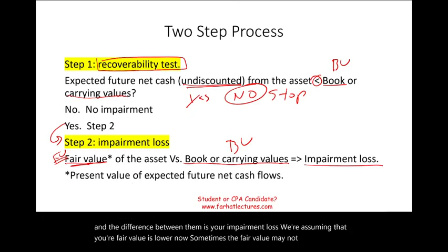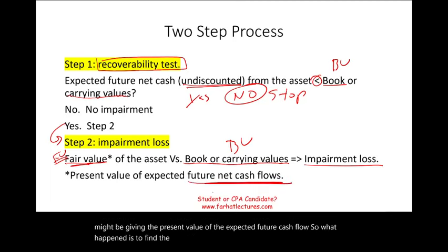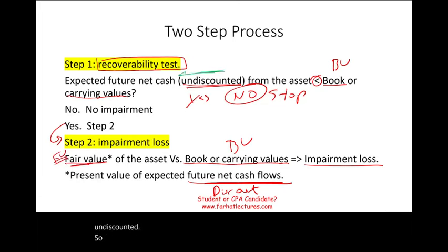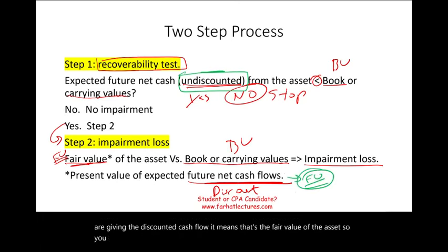Sometimes you may be given the present value of the expected future cash flow instead of a direct fair value. To find the fair value, you discount the future cash flows. This is why the word 'undiscounted' was emphasized in step one — in step two, the discounted cash flow represents the fair value of the asset.